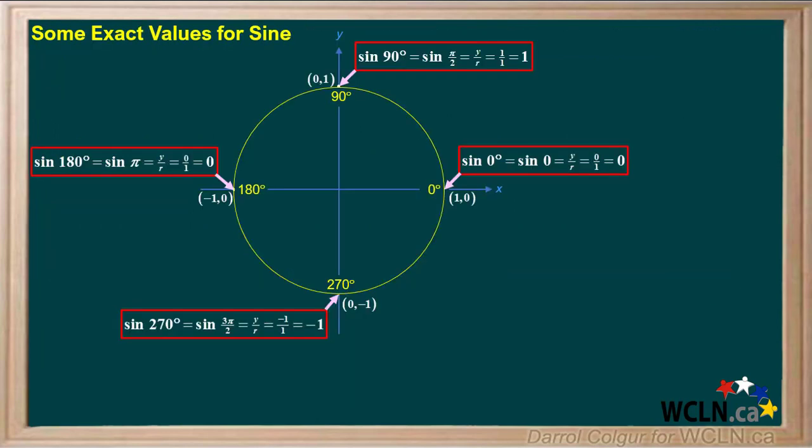Exact values for the sine of zero degrees or zero radians, 90 degrees or pi over two radians, 180 degrees or pi radians, and 270 degrees or three pi over two radians can be obtained from a circle like this, using x and y coordinates. The radius r for this circle is equal to one. If you like, pause the video, look at each angle, and see how the values of sine are obtained.